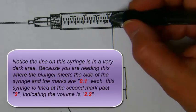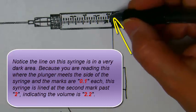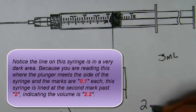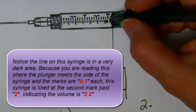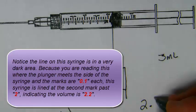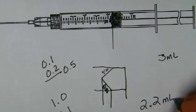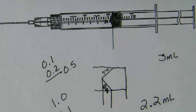This syringe is at the second hash mark after the number two, meaning that it is two—if it were the first hash mark it would be 0.1, but it's the second. So this syringe has 2.2 mLs or cc's in its chamber.